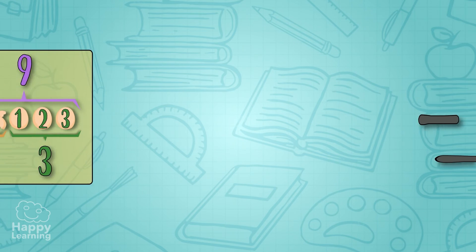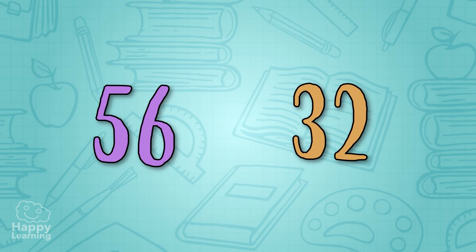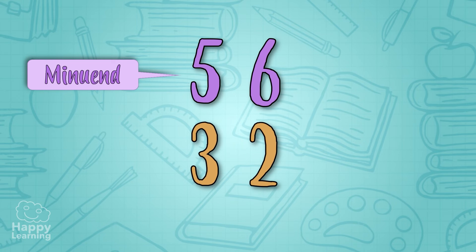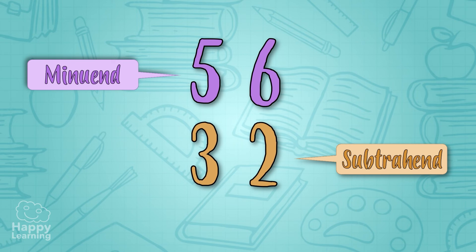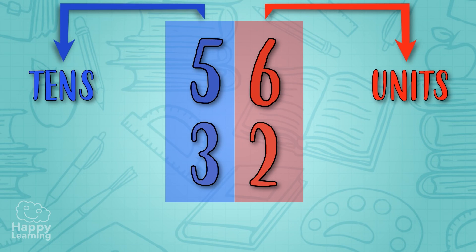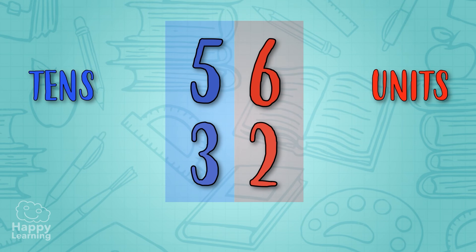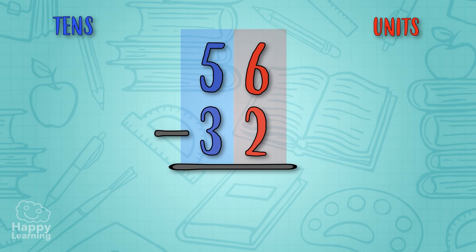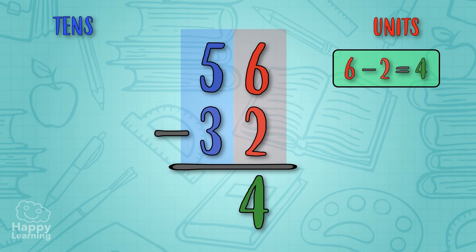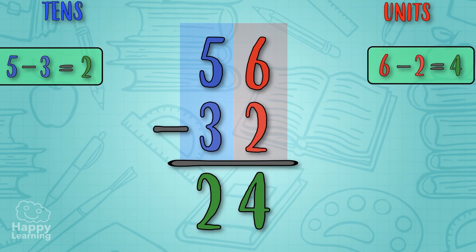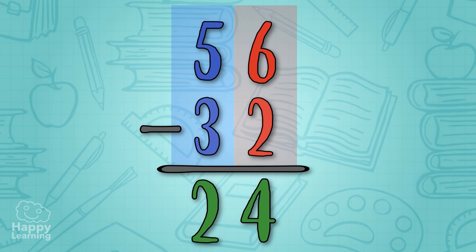To subtract larger figures, for example 56 minus 32, we write down the minuend 56 and under it the subtrahend 32 — always placing units under units and tens under tens. After this we place the minus sign. 56 minus 32: six minus two equals four, and five minus three equals two. The final result is 24. Easy peasy!